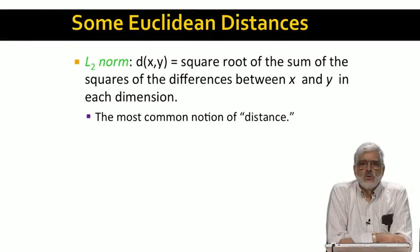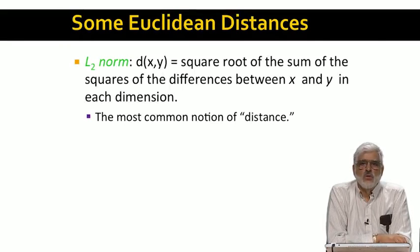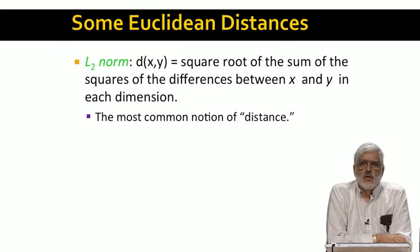The most common Euclidean distance is the L2 norm, which is the square root of the sum of the squares of the distances between the two points x and y measured in each dimension.